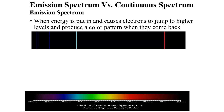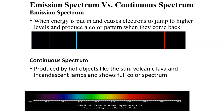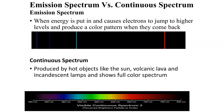When energy is put in and causes electrons to jump to higher levels, you get the emission spectrum — a very unique pattern based on what element it is. The continuous spectrum, on the other hand, is produced by hot objects like the sun, volcanic lava, and incandescent light bulbs, and it shows the full spectrum. Light from the sun, from incandescent bulbs, and from volcanoes all have a continuous spectrum — you see all the colors, not just the few bands of an emission spectrum.